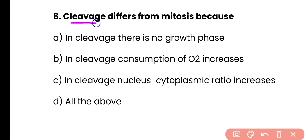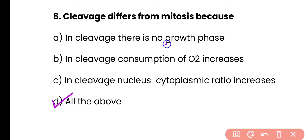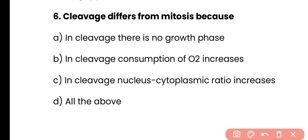Question 6: Which of the following is true about cleavage? In cleavage there is no growth phase; in cleavage consumption of oxygen increases; in cleavage nucleus-to-cytoplasmic ratio increases; or all of the above? Correct answer is option D. Mitosis has a growth phase while cleavage does not. Oxygen consumption increases significantly in cleavage compared to mitosis, and the nucleocytoplasmic ratio increases in cleavage while remaining the same in mitosis.